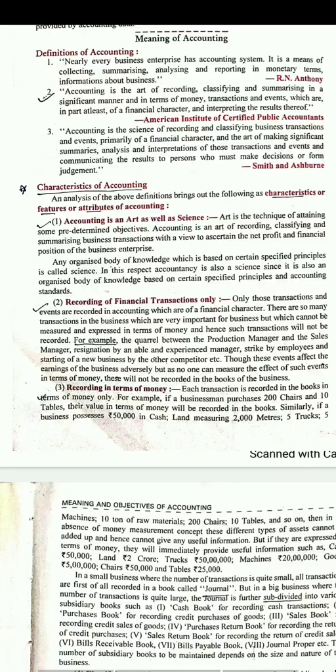Cash book बहुत important है, इस पर पूरा chapter अलग से आएगा। Journal proper अलग है और journal अलग है — journal proper is the part of journal। अगर हम 8 books बनाते हैं और जो entry ऊपर वाली 7 books में नहीं आ रही वो last journal proper में जाती है। Accounting cycle के diagram में भी देख सकते हो कि transaction के बाद या तो journal बना लिया जाता है, उसके बाद ledger बनती है — या अगर बड़ा business है तो 8 subsidiary books maintain कर लेगा।